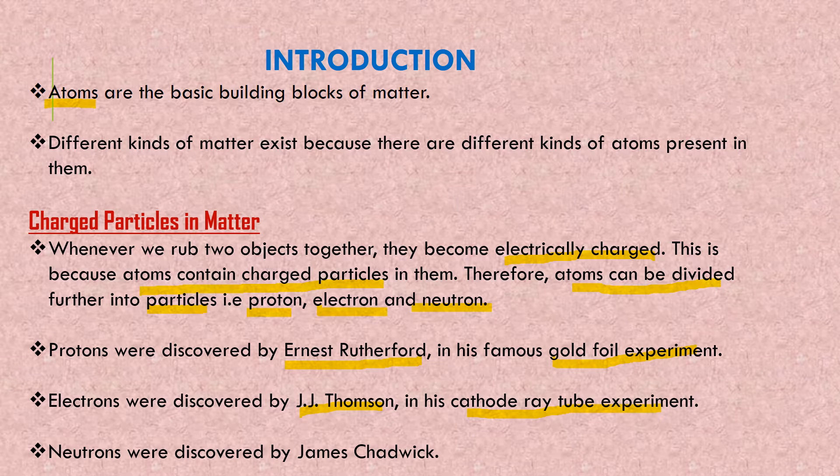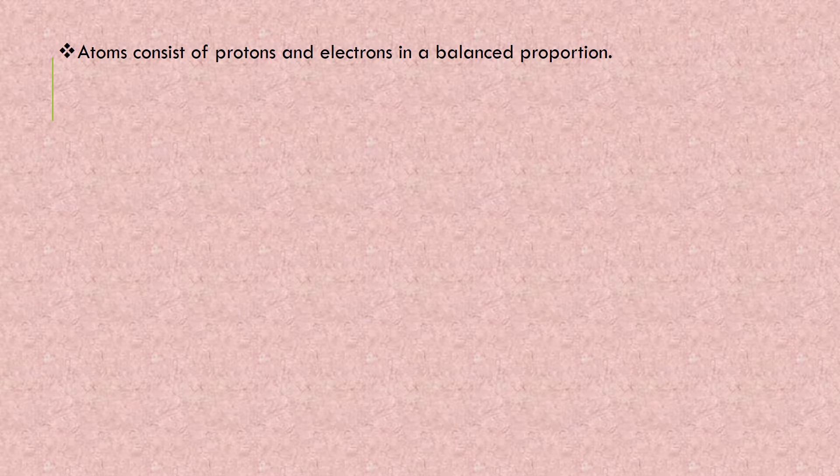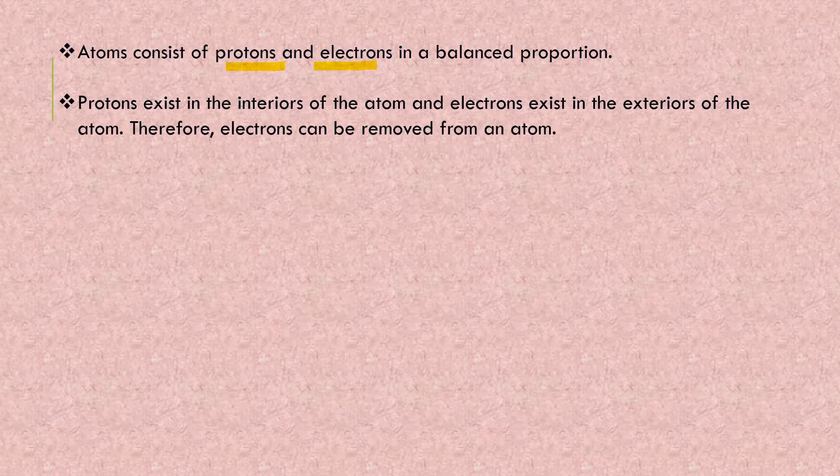Atom consists of protons and electrons in a balanced proportion, so they will cancel each other and normally the matter will be neutral - that means no charge at all. Protons exist in the interiors of the atom and electrons exist in the exterior of the atom. Therefore, electrons can be removed from an atom.